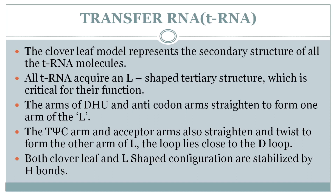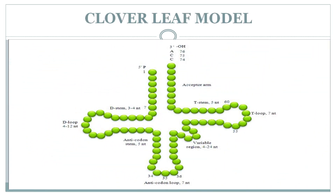All tRNA molecules acquire an L-shaped tertiary structure which is critical for their function. The DHU and anticodon arms straighten to form one arm of the L, while the TΨC arm and acceptor arm straighten and twist to form the other arm of the L. Both the Cloverleaf and L-shaped configurations are stabilized by hydrogen bonds.